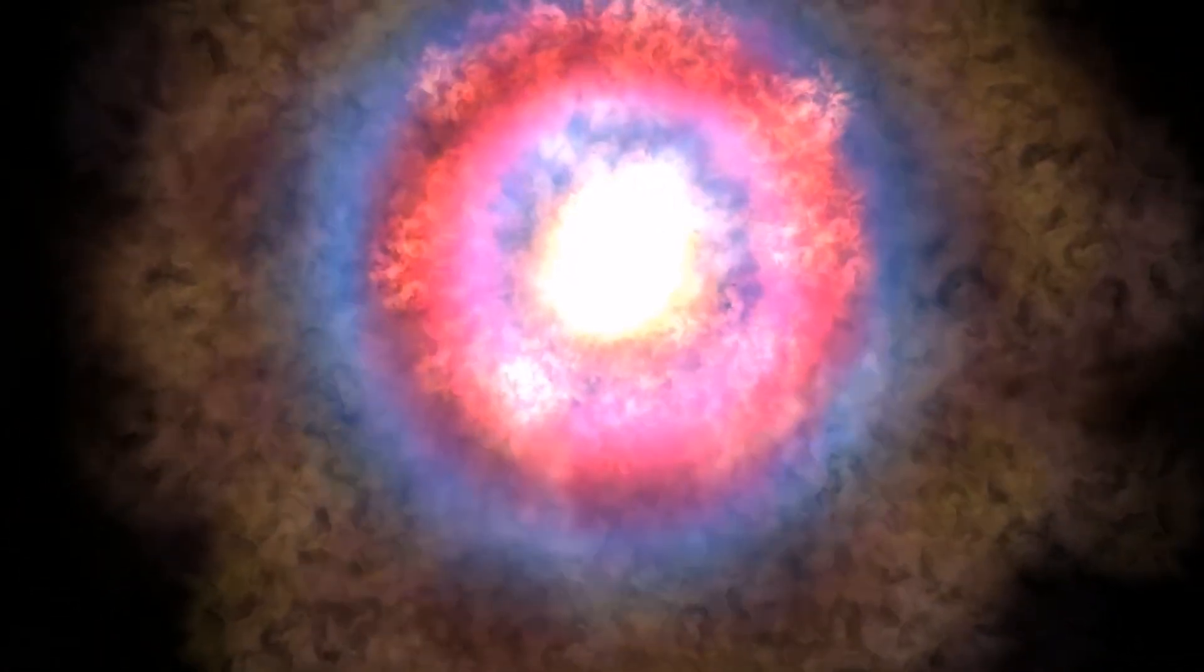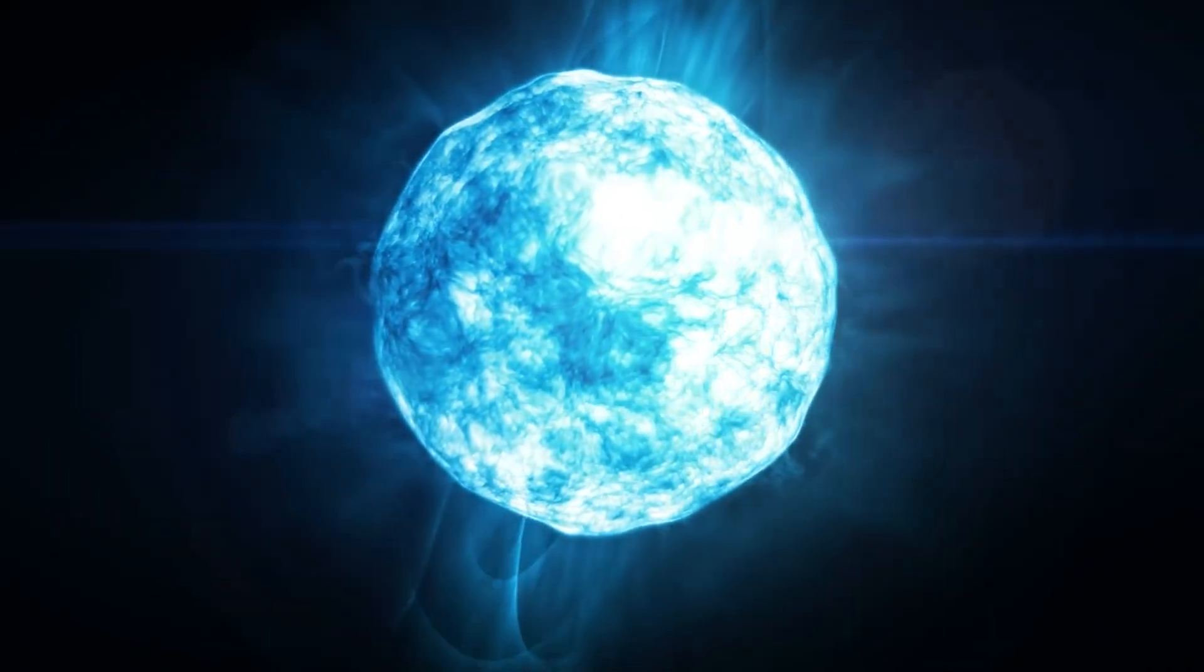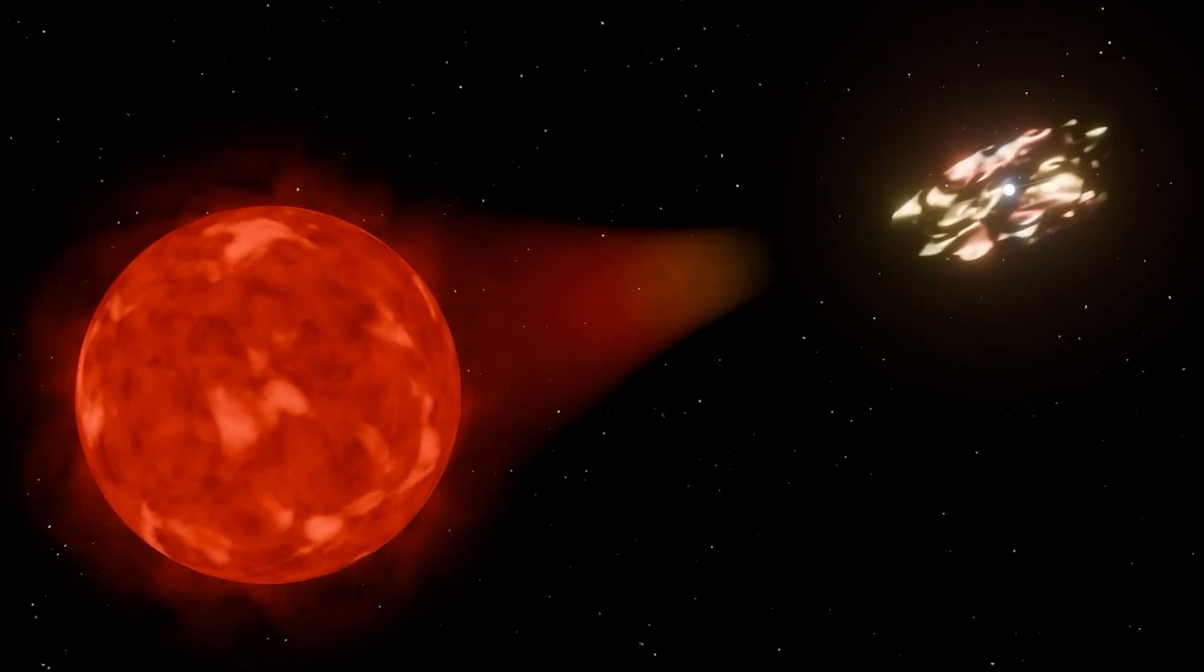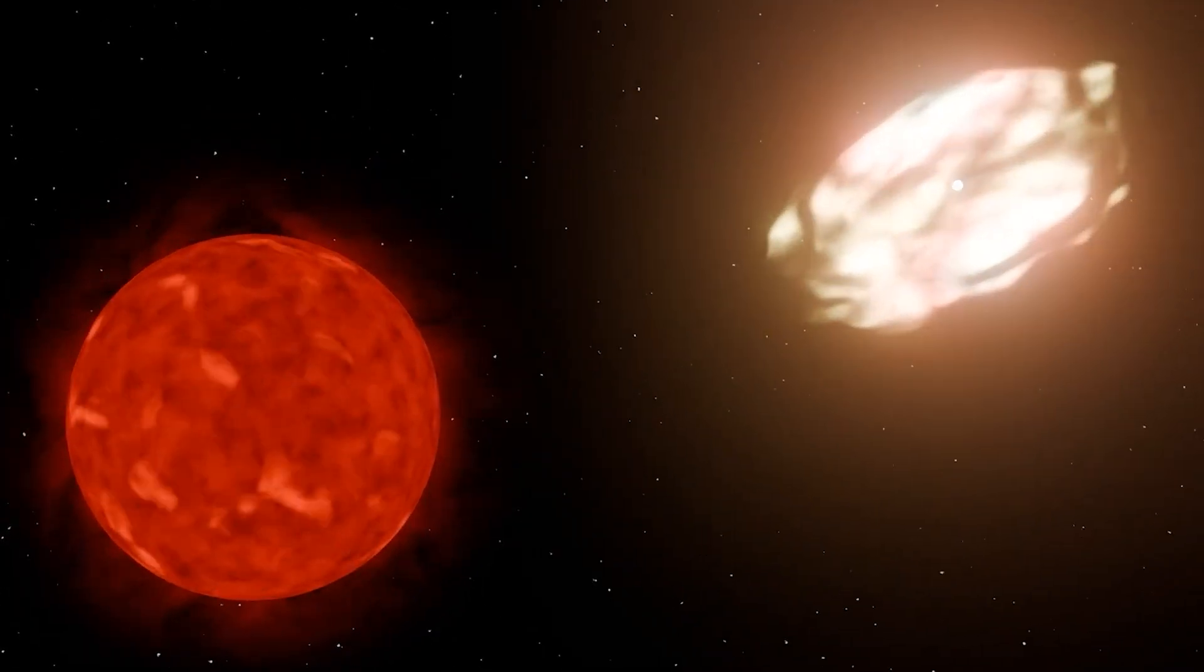After the light fades, an expanding ball of ejected material, tinted pale orange, appears. The nebula then disperses, leaving behind only a small white spot, the white dwarf that survived the explosion. The expected flare will be the third recorded in the history of observations of T Corona Borealis.